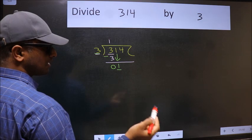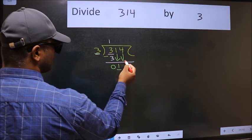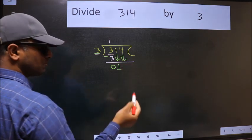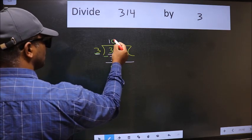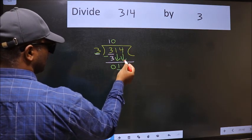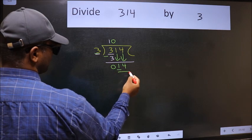So we should bring down the second number. And the rule to bring down the second number is we should put 0 here. Then only we can bring down this number. Now 14.